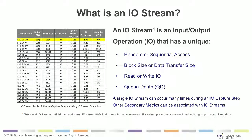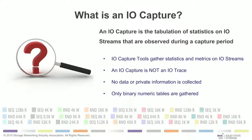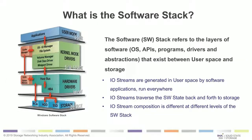We can't emphasize that enough — the way we build and set our IO performance analysis is done off of data type rather than actual data. The tool is capturing things like 'we did a 7.8K read,' and if you want to replay that at some point, it can be done with dummy data rather than capturing the data itself. An IO capture is the tabulation of statistics on the IO streams, captured and reported as a binary numeric table — a compact form that can be successfully replayed.